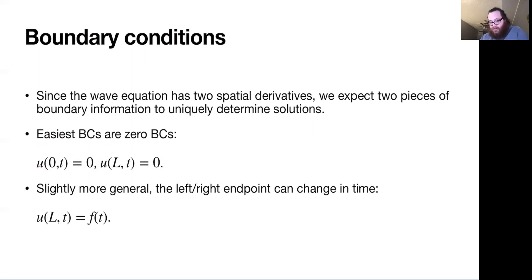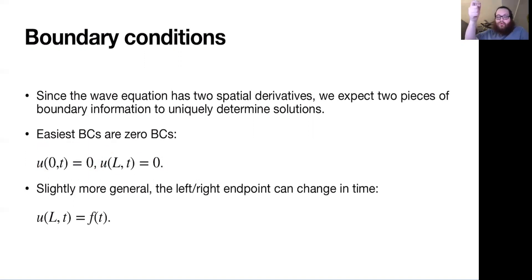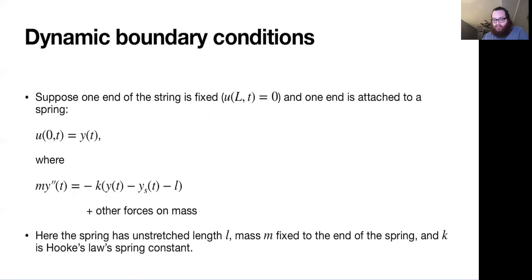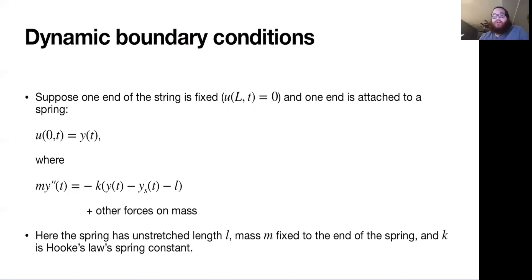But what you can do is use a slightly more general boundary condition where instead of tying the string down to height zero at one of the endpoints, the string is actually able to move at one of these endpoints. Maybe you're holding the string and making it move, or possibly we have it tied to a spring system. The rest of this section looks at what that looks like if one of the ends of your string is attached to the end of a spring.